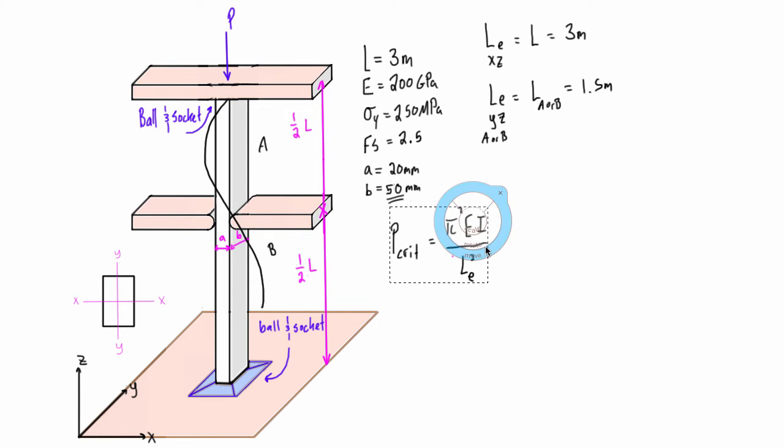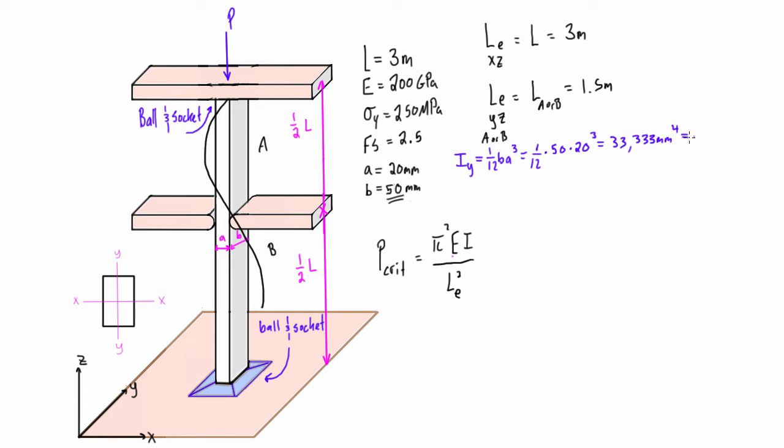We will be needing to use this expression here for P critical for buckling in each of those directions. But before we do that, we're going to need the moment of inertia about the x-axis and the y-axis. So I'll just throw those up right here. And for buckling in the YZ plane, let's throw in the subscripts here. We're going to need the moment of inertia about the y-axis. And if we just throw in all the numbers now that we have here, we can put in the subscript YZ for the effective length. We're going to find that the P critical is equal to 29.2 kN.